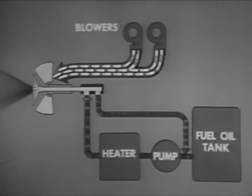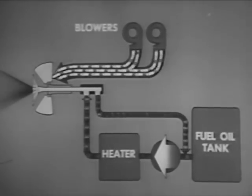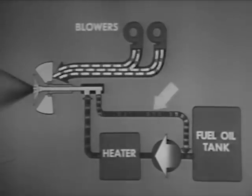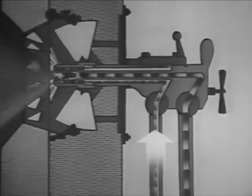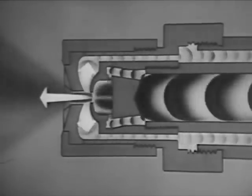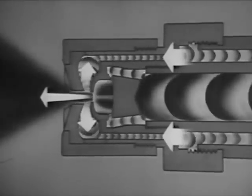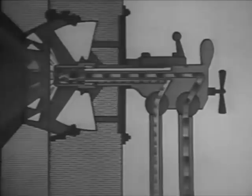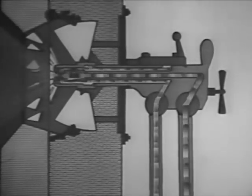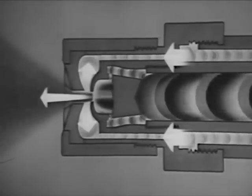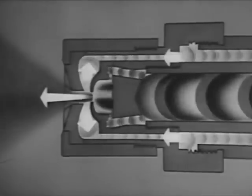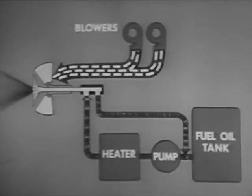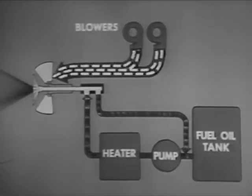In controlling the fuel supply to the burner, you keep the pressure on the oil entering the burner constant and at the maximum for the system. You vary the pressure on the return line. When you close down on the return line valve, less oil can get through. As a result, the pressure builds up in the return line. This greater pressure forces more oil into the furnace than before. When you open up on the valve, the valve passes more oil and return line pressure drops. Less oil enters the furnace. Varying the speed and number of the forced draft blowers is the principal method of controlling the burner air supply.